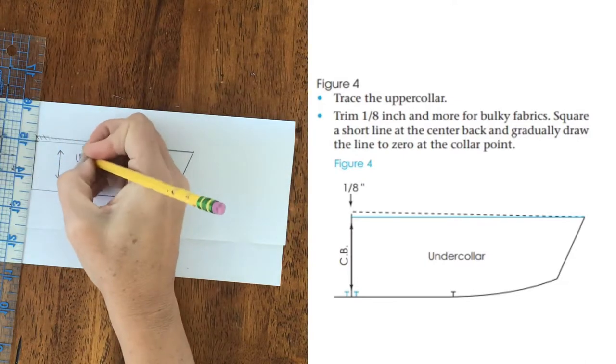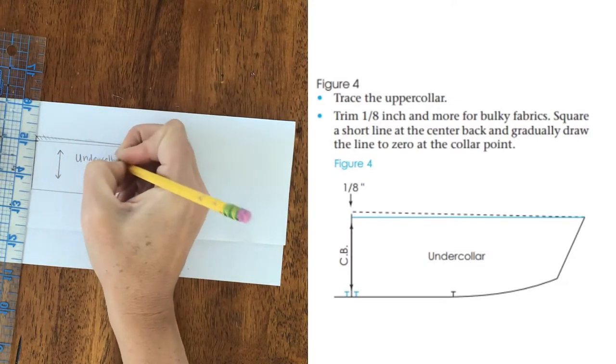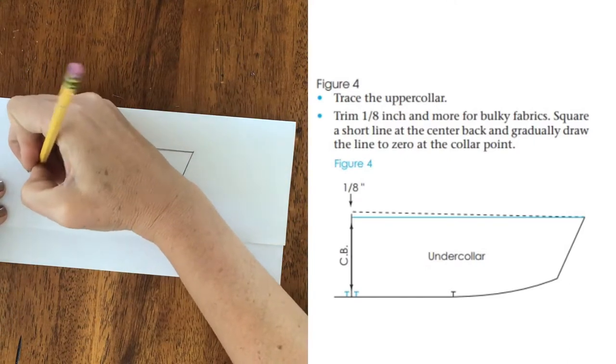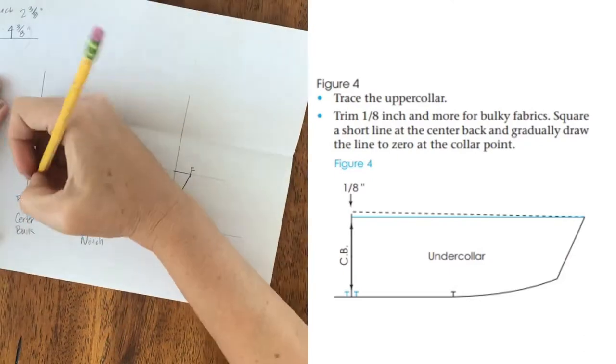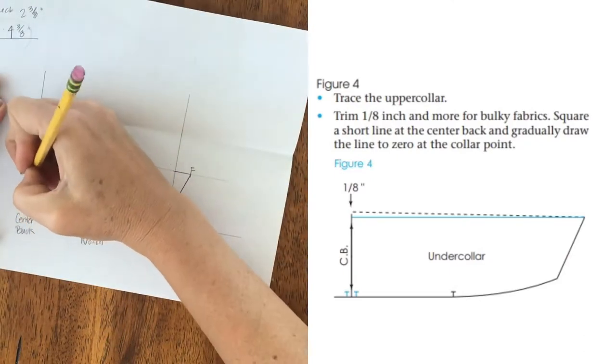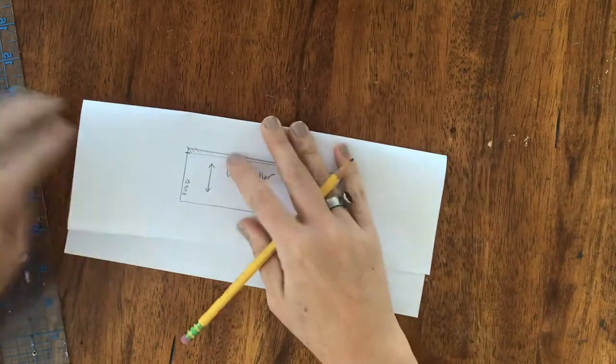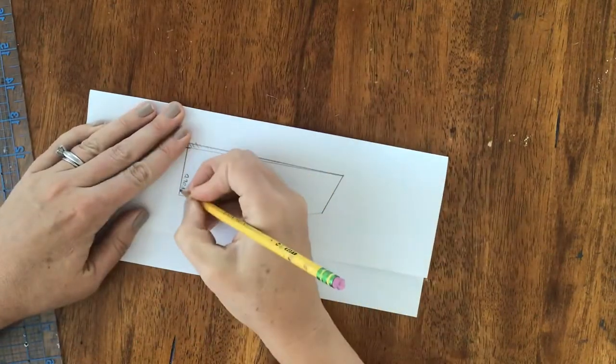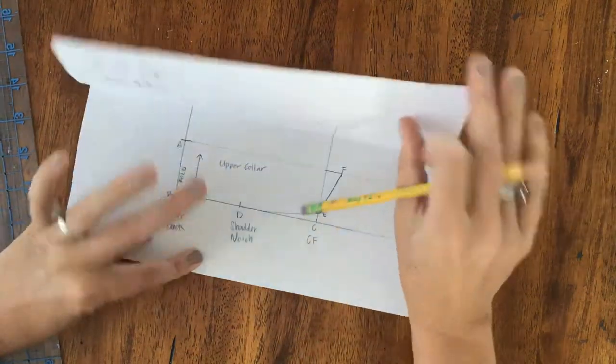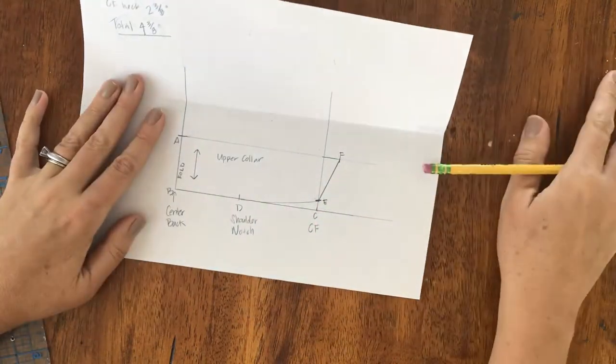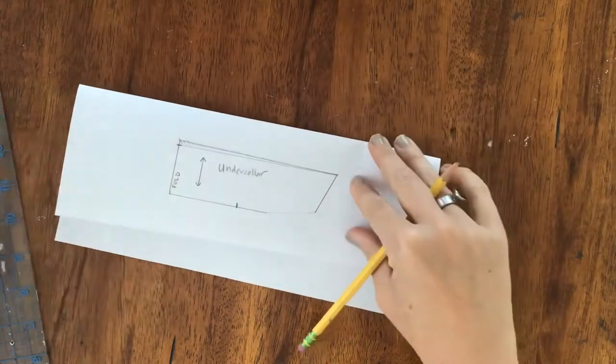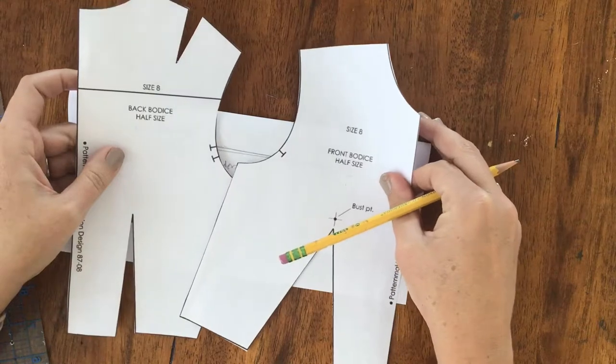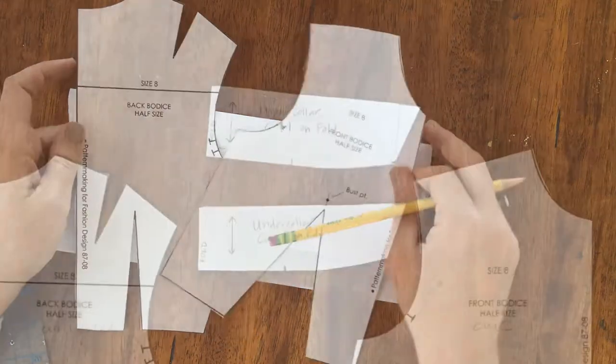Great. So I'm going to go ahead and add my grain line. And I'm going to write that it is my under collar. This is our fold. I probably should have mentioned that. Same over here. This is our fold. Oh, I forgot to label my notches. This is our notch. Okay, so now this is ready for a test fit. In order to do a test fit, you will have to also cut out your front and back bodice to have something to sew it to. And let's see how this guy looks.